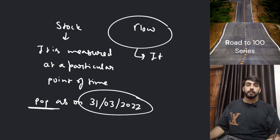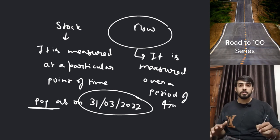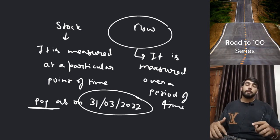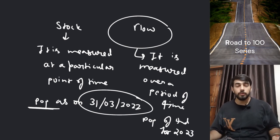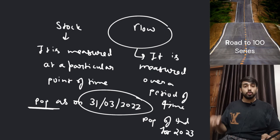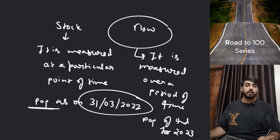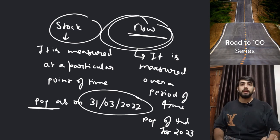Now if we talk about the flow concept, it is measured over a period of time. If it is measured over a period of time, then I would talk about population of India for 2023 — asking for population for the entire year. If I ask what India's population is today, that becomes a stock concept. But if I ask what India's population was throughout the entire year, that becomes a flow concept. So this was all about stock and flow. Stock has no time dimension and is a static concept; flow has a time dimension and is a dynamic concept.